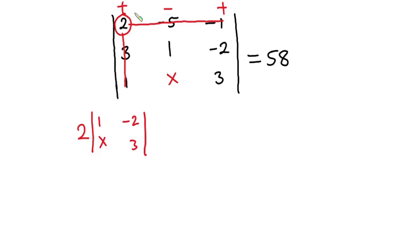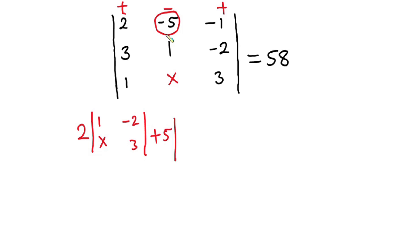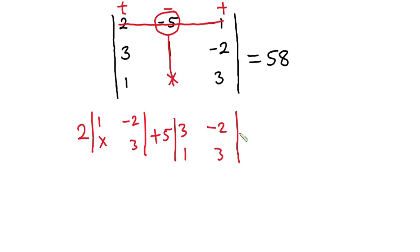Now let's focus on this negative 5 over here. You can see that there is a negative sign here, so negative times negative is positive — this side becomes plus 5. Taking this negative 5, the elements on this column and on this row are not considered, so we are left with 3, 1, negative 2, and 3 as the 2x2 matrix.